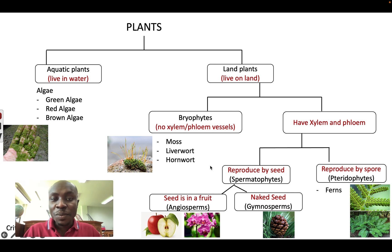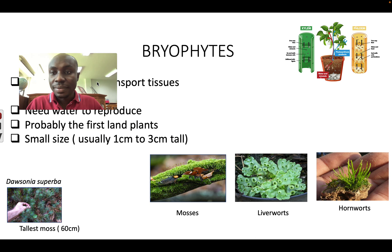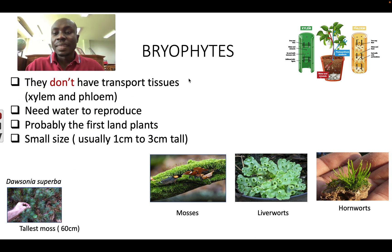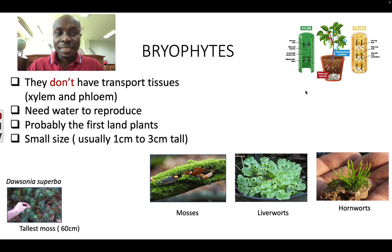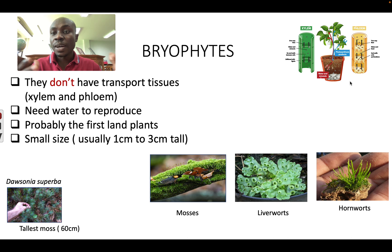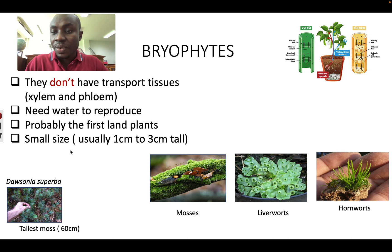Today we're going to look at one group of plants: the bryophytes. Like we said before, bryophytes do not have transport tissue — no xylem, no phloem. In bigger plants like mango or apple trees, they have xylem and phloem to transport water and food, which is why they can grow very, very big. But bryophytes do not have these, so they cannot grow bigger. They are very, very small.